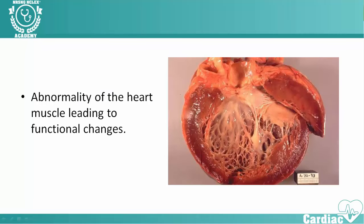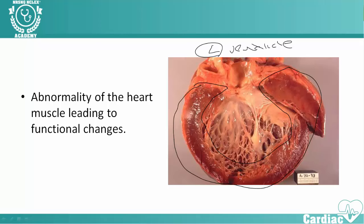If you look at this picture here, this is a left ventricle and you can see how thick this muscle is. This thickening of the muscle of the left ventricle is basically one of the forms of cardiomyopathy. It's that thickening of the muscle, which is going to lead to decreased cardiac function. So basically it's an abnormality of the heart muscle leading to functional changes.